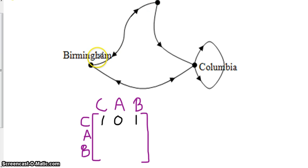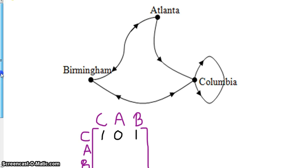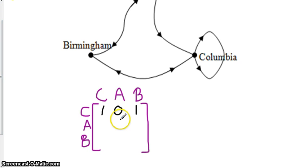Now from Atlanta, I have an arrow here going to Birmingham. I have an arrow going to Columbia. But there is no loop going to Atlanta. So we have a zero right here, a one, and a one.